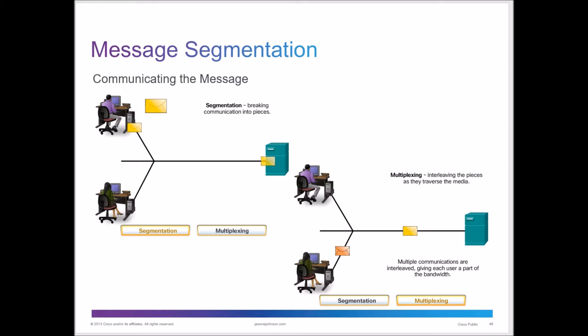We have a term called segmentation. When we take a message and send it through the network, that message gets broken down into smaller pieces of information so it doesn't take up as much bandwidth at one time, allowing us to share network resources. Just like traffic with lanes and merging cars, if a message has ten cars, those cars are sent one at a time, merging with other messages on the network. That process is called segmentation.